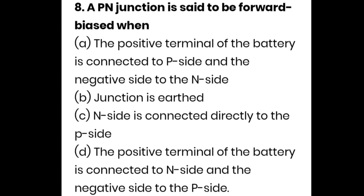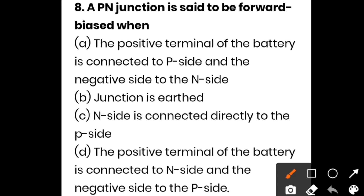The next question: a PN junction diode is forward biased when — option A is the positive terminal of the battery is connected to the P side and negative terminal is connected to the N side; option B is the junction is earthed; option C is N is directly connected to the P side; option D is positive terminal connected to N side and negative to P side. The correct answer is option A — positive terminal to P side, negative terminal to N side.